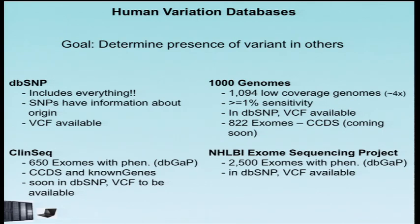The ClinSeq Project, you've heard a little bit about. Currently, we have data for 650 exomes with a plan to increase that to 1,500. These individuals have extensive phenotypes, and the phenotypes will be deposited in dbGaP, and soon we'll be releasing data from these individuals to dbSNP as well. Another project that's slightly newer is the NHLBI exome sequencing project. Currently, they have 2,500 exomes with phenotype, again, to be deposited into dbGaP, and this is in dbSNP, and a VCF will be available.